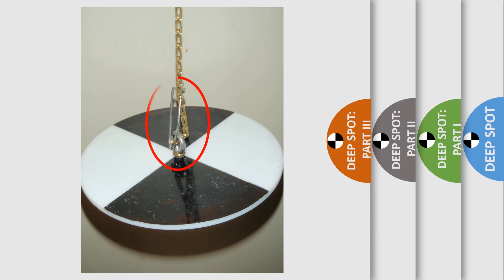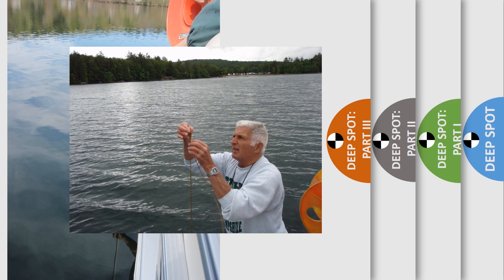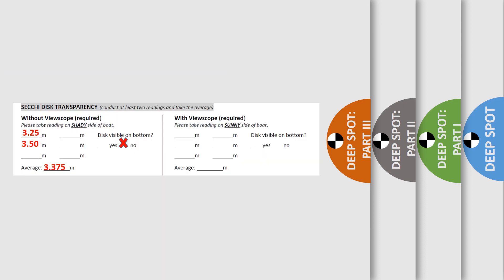Attach the chain to the eye hook on the Secchi disk using the clip. On the shady side of the boat, lower the Secchi disk into the water. Have one person watch the disk as it's lowered. Lower the disk until you can't see it anymore, then raise the disk slowly until you can just make out the white portions of the disk. Mark the chain at the water's surface and determine the depth to the nearest tenth of a meter. Record the depth on your field data sheet. Conduct at least two readings, ideally by two separate individuals, and mark whether you saw the disk on the lake bottom.